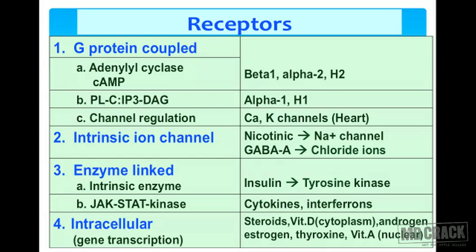The phospholipase C / inositol trisphosphate and diacylglycerol system exists for alpha-1 and H1 receptors. Calcium and potassium channel regulation by G-protein coupled receptors also occurs. Intrinsic ion channels exist for the nicotinic receptor, which has a sodium channel.